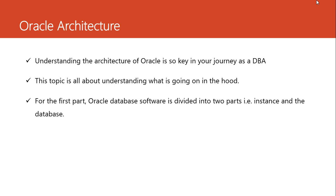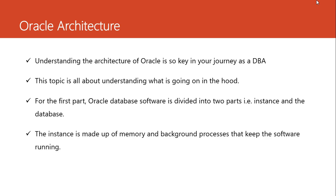Oracle database software is divided into two parts: the instance and the database. When you install Oracle software on your machine, your laptop, or a server, it is divided into these two parts. The instance refers to the memory and the background processes that keep running to ensure the Oracle database software is up and running and the database is available. We will be looking at these memory structures and background processes in detail.